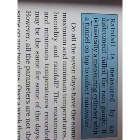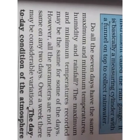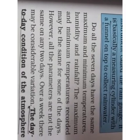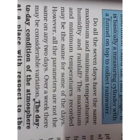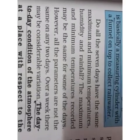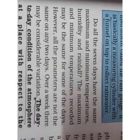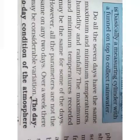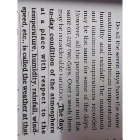Do all seven days have the same maximum and minimum temperatures, humidity, and rainfall? No, it is never like that. None of the days have the same maximum or minimum temperatures, and even humidity is not the same. The maximum and minimum temperatures may coincidentally be the same for some days, but all the parameters are never the same for any two days. There may be considerable variation — the conditions in which those maximum and minimum temperatures occur are never the same over a week.